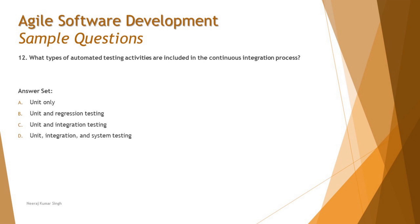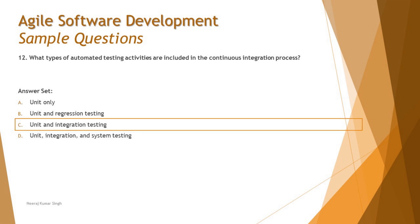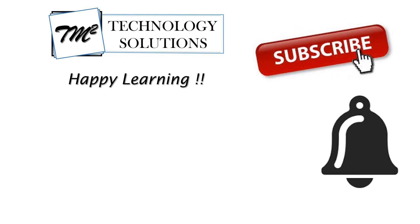The four things generally automated in a CI pipeline are: static analysis, compilation, unit testing, and integration testing. Given the options — unit only; unit and regression; unit and integration; unit, integration, and system — the right answer is C: unit and integration testing are the best candidates for inclusion in the continuous integration process. That wraps up this tutorial — feel free to comment below with any queries. Keep learning, keep exploring, and happy learning!